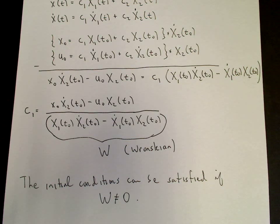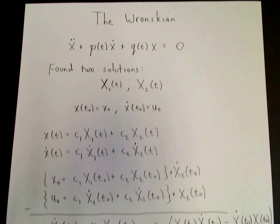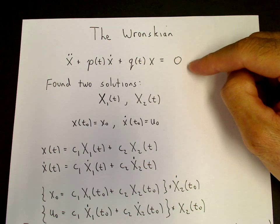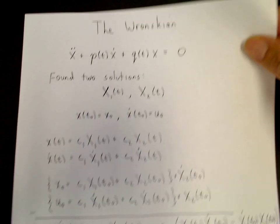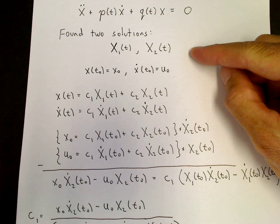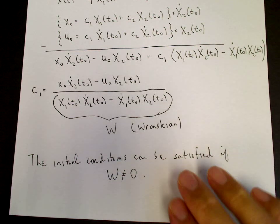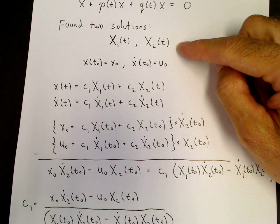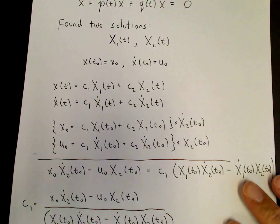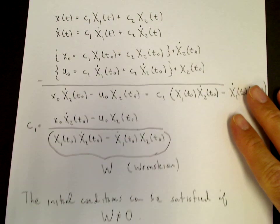And it turns out that this is related to a concept in linear algebra. The concept in linear algebra is that the solutions of the second order linear equation form a two-dimensional vector space. And x1 and x2 then are vectors in that vector space. And the condition that the Wronskian is not equal to 0 is equivalent to the condition that x1 and x2 are linearly independent vectors in that two-dimensional vector space. For those of you who know linear algebra.